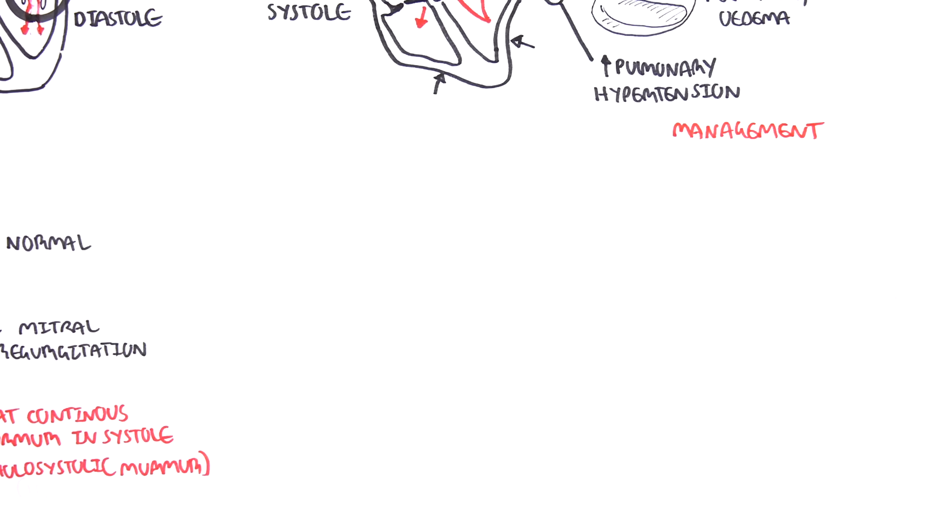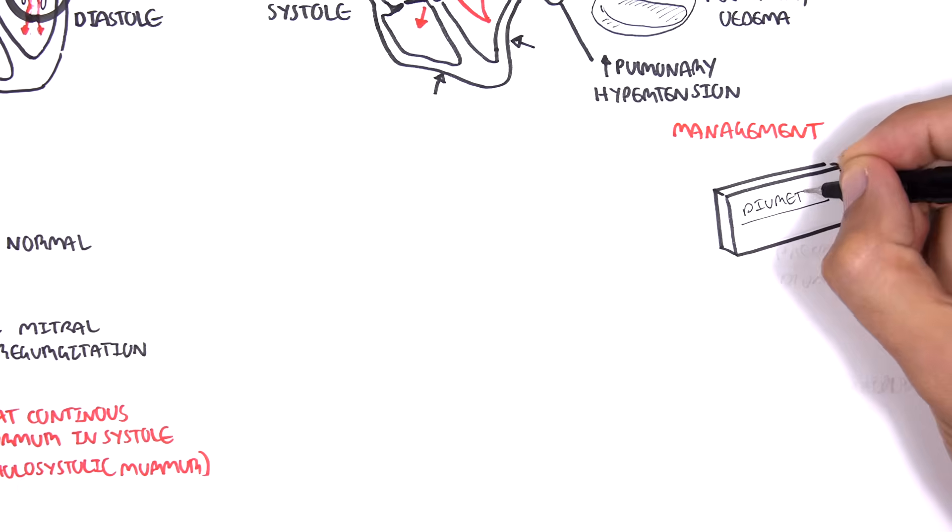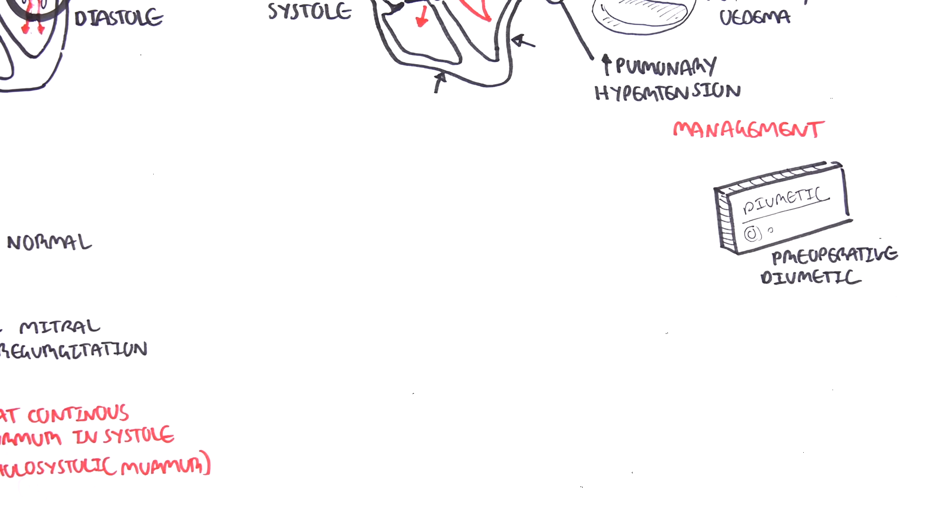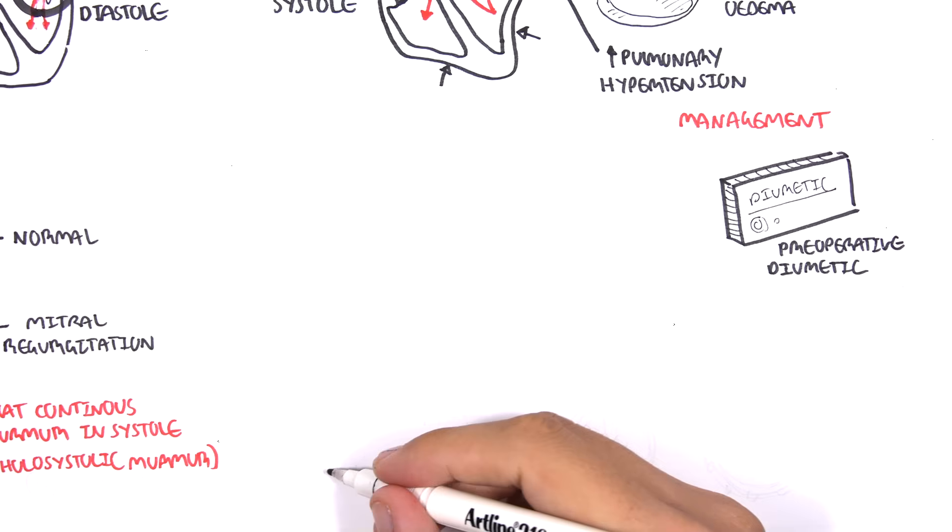The management of mitral regurgitation includes diuretics preoperatively to reduce peripheral edema and lung edema prior to surgery. Surgery includes valve repair or replacement.